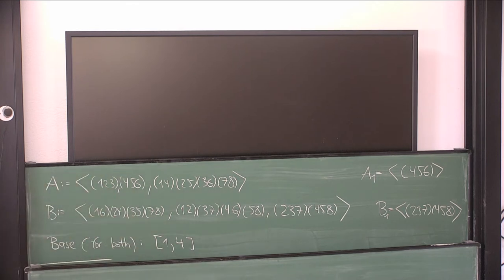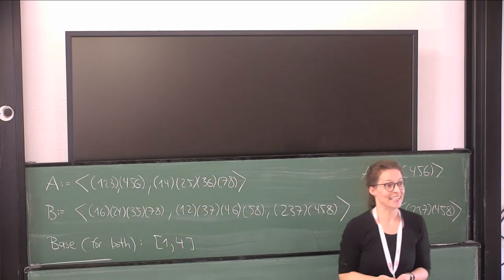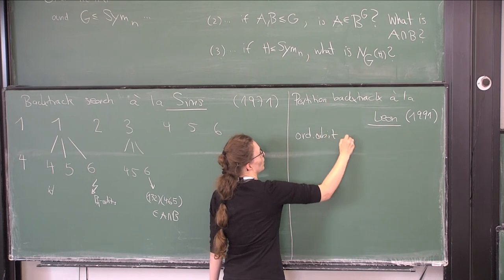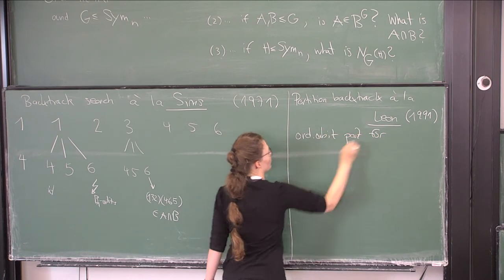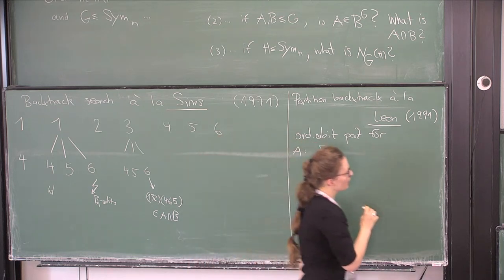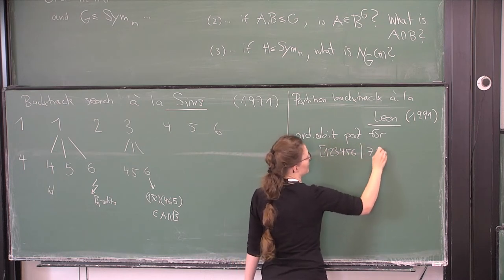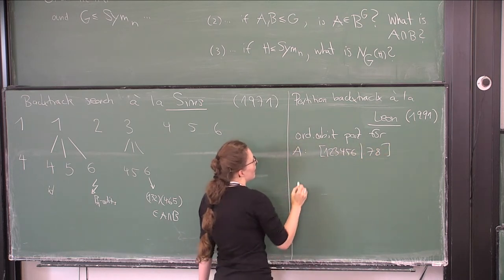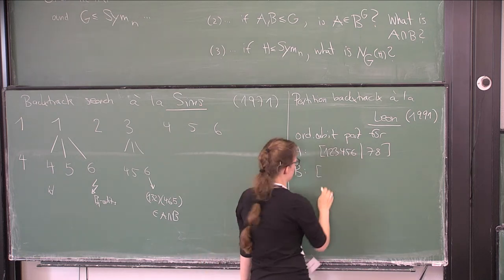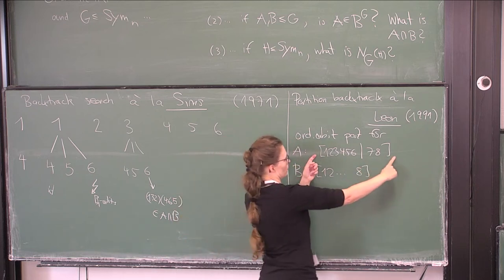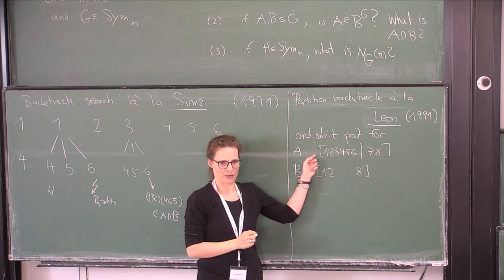We write down partitions that capture something of the group structure, and say: if you're an element of A you must stabilize this partition; if you're an element of B you must stabilize this partition; so if you're in the intersection you must stabilize the meet of these partitions. Let's write down an orbit partition — the easiest thing. For A this would be {1,2,3,4,5,6} and {7,8}; for B it's just one cell since B is transitive. So A∩B stabilizes the meet, which is {1,2,3,4,5,6} | {7,8}.